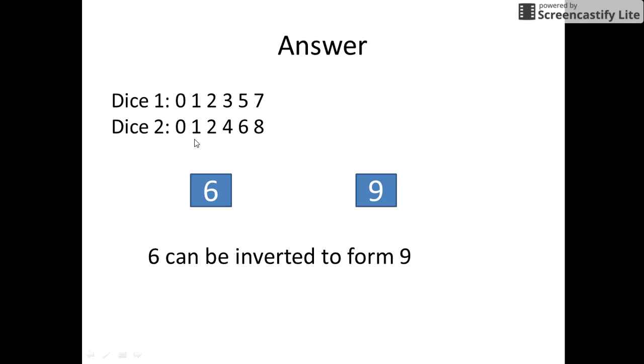Since we know that we have the possibility of getting 11 and 22 as dates in any month, we print 1 and 2 on both the dices.